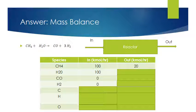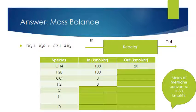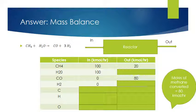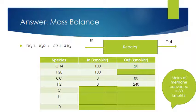Let us look at the solution. We have 100 kilomoles per hour of methane flowing in and 20 leaving, which means 80 kilomoles per hour of methane was consumed in the reactor. From stoichiometry, for every mole of methane converted, we have to make one mole of CO. No CO came in with the feed, therefore 80 kilomoles per hour of CO must be leaving the reactor. For every one mole of CO we make, we have to make three moles of hydrogen — so three times 80, or 240 kilomoles per hour of hydrogen, must be flowing out.